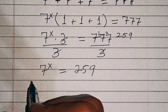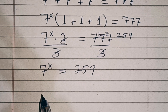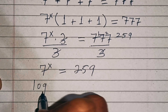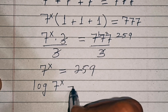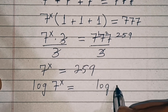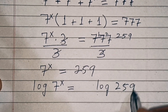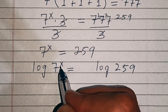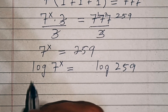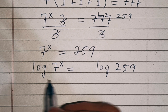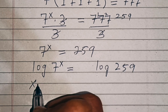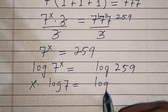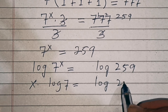In the next step, we apply log on both sides, so we have log of 7 power x equal to log of 259. Then, using the power rule, the exponent x comes down to give us x times log of 7 equal to log of 259.